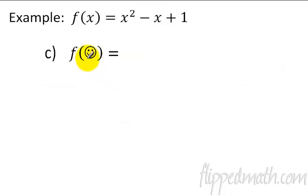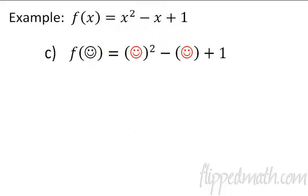What if you got some weird symbol like a happy face? That just means you plug it in to wherever there was an x. So it becomes happy face squared minus happy face plus 1. That's your answer.